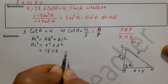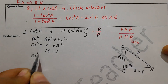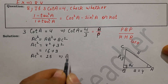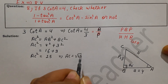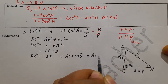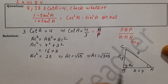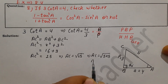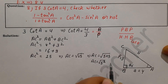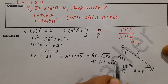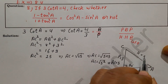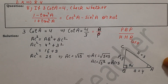16 plus 9 implies AC² equals 25. Taking the square root, the factors of 25 are 5 into 5, so AC equals √(5²), and the square root cancels, giving AC equals 5 units. Now our triangle is complete.